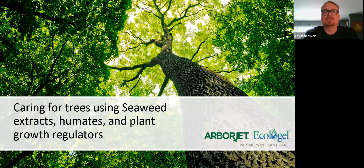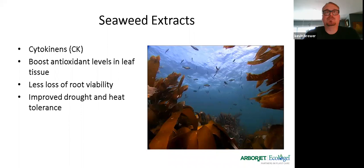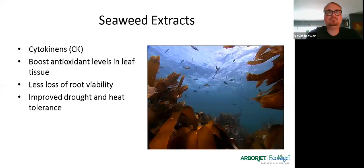Using things like seaweed extracts, humates, and plant growth regulators is an exceptional way of taking care of trees early before things go downhill — and even using these things once you treat a tree therapeutically to get them out of the spiral and keep them on the healthy side. Seaweed extracts have been used in farming for hundreds of years in the northeast — native Americans used these. There are a lot of cytokinins in North Atlantic kelp especially, and this improves root growth, boosts antioxidant levels in leaf tissue, and gives better root viability and improved drought and heat tolerance.